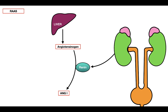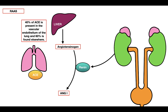After angiotensin 1 is formed, in order to form angiotensin 2, angiotensin 1 needs to interact with another enzyme found in the lungs, specifically the vascular endothelium, as well as other places in the body. Angiotensin 1 is converted into angiotensin 2 by angiotensin converting enzyme, or ACE. About 40% of ACE is present in the vascular endothelium of the lung, whereas 60% is found elsewhere. This is how angiotensin 2 is formed in the renin-angiotensin-aldosterone system.